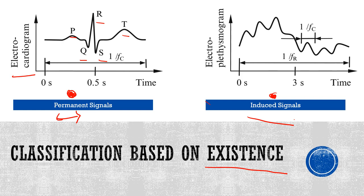Induced signals are artificially triggered, excited, or induced, as compared to permanent signals. They exist roughly for the duration of the excitation — as soon as the artificial impact is over, the induced biosignal decays with a certain time constant determined by body properties, such as weak or strong intensity decay. The interaction of the tissue with the induced stimulus is recorded as an induced biosignal. One example is the electroplethysmogram, where an artificial current is induced in the tissue.